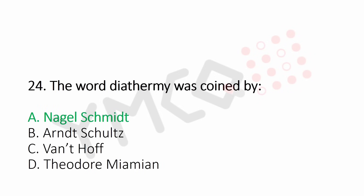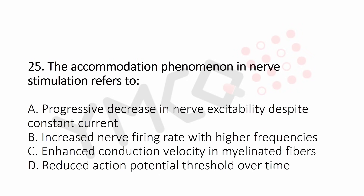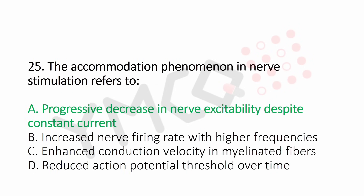Question 25: The accommodation phenomenon in nerve stimulation refers to — Option A: progressive decrease in nerve excitability despite constant current, Option B: increased nerve firing rate with higher frequencies, Option C: enhanced conduction velocity in myelinated fibers, Option D: reduced action potential threshold over time. The answer is Option A: progressive decrease in nerve excitability despite constant current.